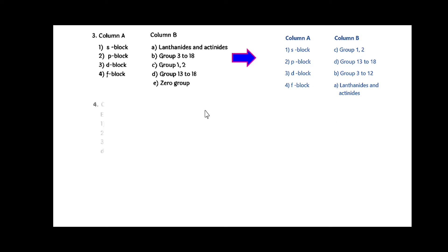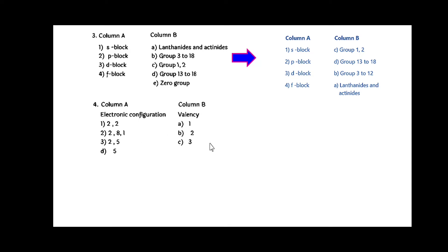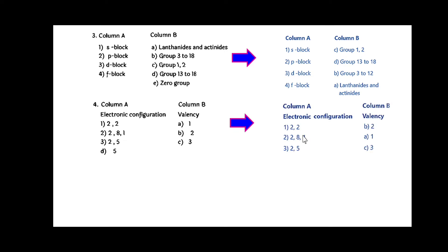Number four: in column A electron configurations are given, whereas in column B there is a valence shell. The answers are: electron configuration 2-2, the valence is 2; for 2-8-1, the valence is 1; for 2-5, the valence is 3.